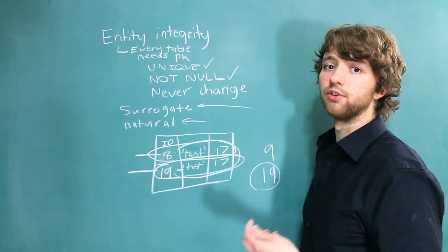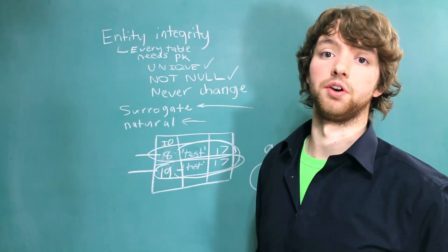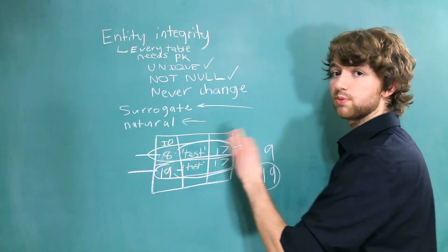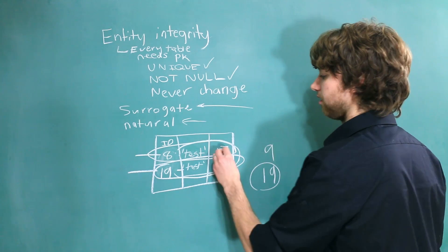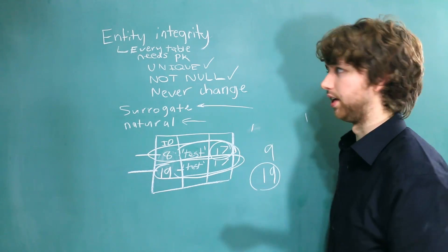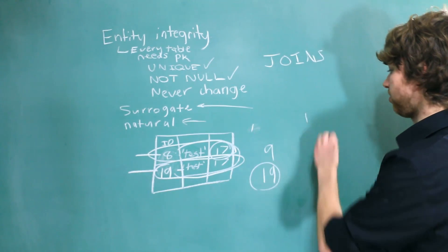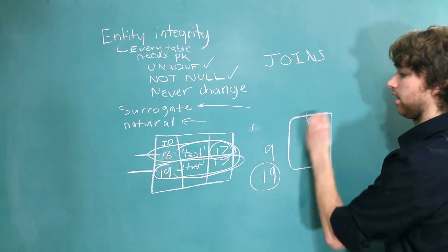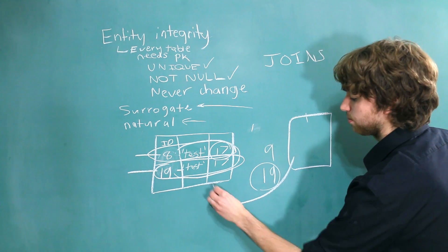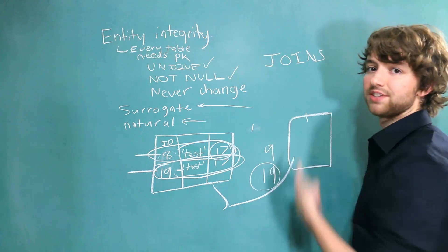Are surrogate keys better? I don't know, that's up to you. There's downsides and upsides to using either one. For example, natural keys are much more readable. Instead of having this number here, we could have a string that actually has a value in it. And this allows you to do less joins, which we haven't really discussed, but essentially when you have multiple tables and you want to get data from both of these tables, you have to join them. Natural keys allow you to use less joins.